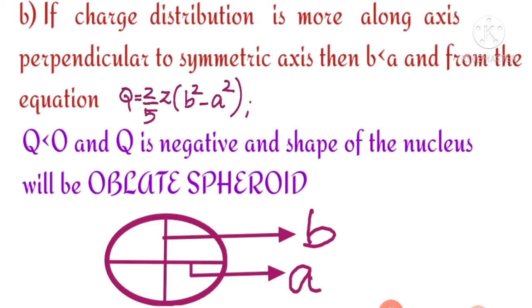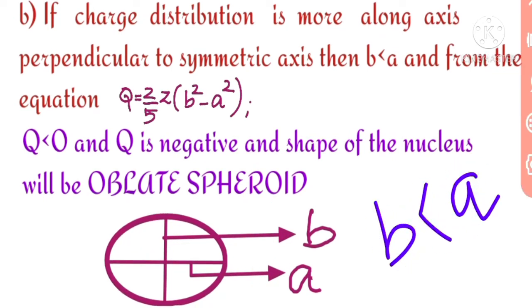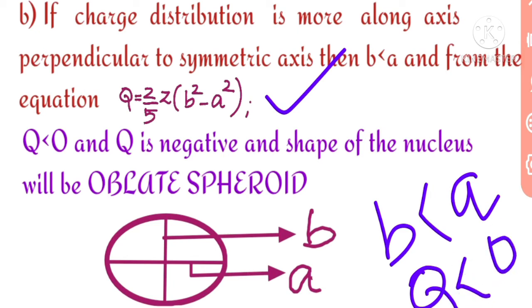Second possibility: the charge distribution is compressed along the symmetric axis, meaning b is less than a. Here, b squared minus a squared is negative, so Q is less than zero — a negative quantity. This shape is called an oblate spheroid.